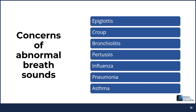Next is croup — inflammation of the larynx, trachea, and bronchioles that causes the vocal cords to swell, producing a distinct barking cough with an inspiratory stridor. Bronchiolitis is a common lung infection causing swelling, irritation, and buildup of mucus, caused by viruses such as RSV. It presents with coughing, sneezing, and a prolonged expiratory phase, and can last one to two weeks.